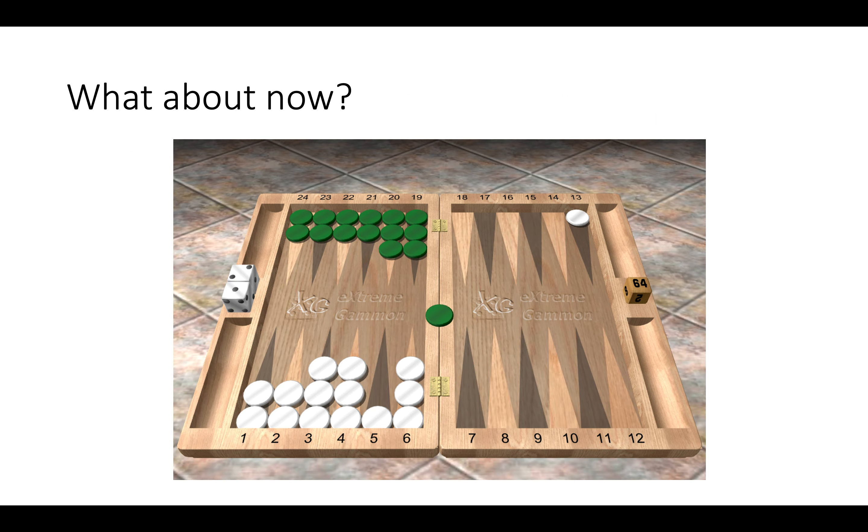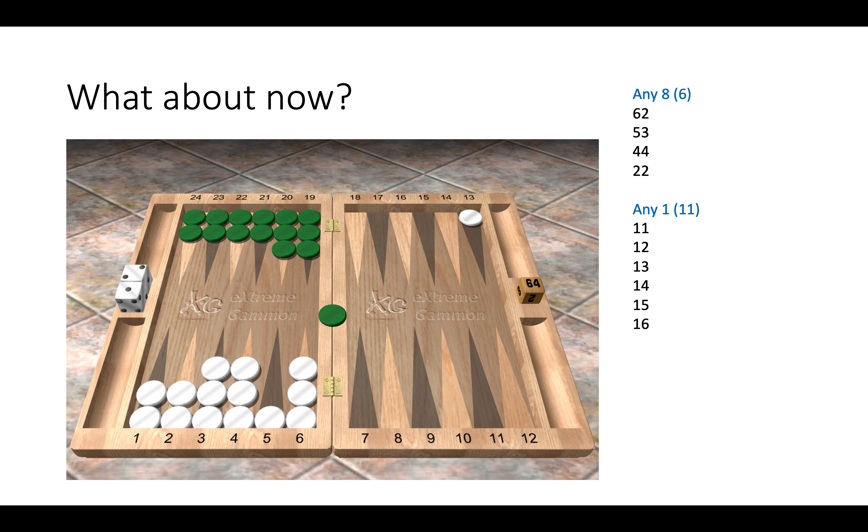Now what about now? Do you think we have more chance of covering the blot or less chance of covering the blot? Again, green is on the bar. So here we only have 17 chances of covering. We have any eight and then we have any one. And always when we make these calculations, make sure we're not counting the same number twice to give us a misreading. So here we only have 17, whereas before we had 24, so a much better chance of covering the blot in the previous position.